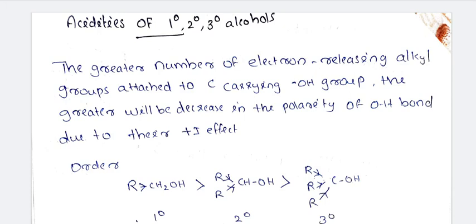When alcohol groups are attached, the CH3 group exhibits an electron releasing nature. It affects charge separation. Greater will be the decrease in the charge separation due to the plus I effect. When we get CH3 attached, the electrons make oxygen more negative. Because oxygen is negative and hydrogen is positive, there is charge separation.